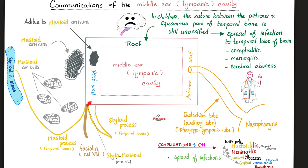The posterior wall is related to the styloid process, part of the temporal bone, and the mastoid process, also part of the temporal bone. What do you call the foramen between the styloid process and the mastoid process? The stylo-mastoid foramen. What's the name of the cranial nerve that leaves in this area? It's the facial nerve, cranial nerve number seven. So, if I have otitis media, one of the complications could be facial nerve paralysis, aka Bell's palsy, which will give me ipsilateral paralysis of one half of my face. Moreover, behind my middle ear cavity, there is the mastoid antrum, which is the largest mastoid air cell.